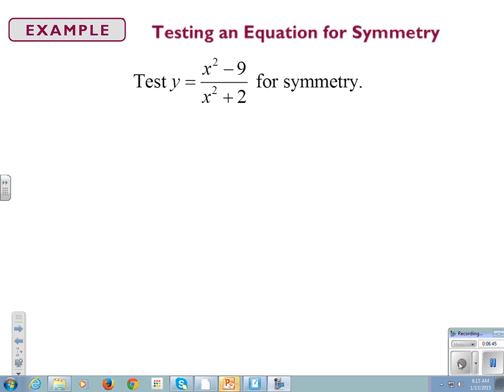Let's test some stuff. If I have y equals x squared minus 9 over x squared plus 2, we're going to do our three tests. We're going to plug in negative y instead of y. It's not equivalent. What scenario would it be an equivalent situation? What would I have to do to this negative y to get it to look like our original equation?